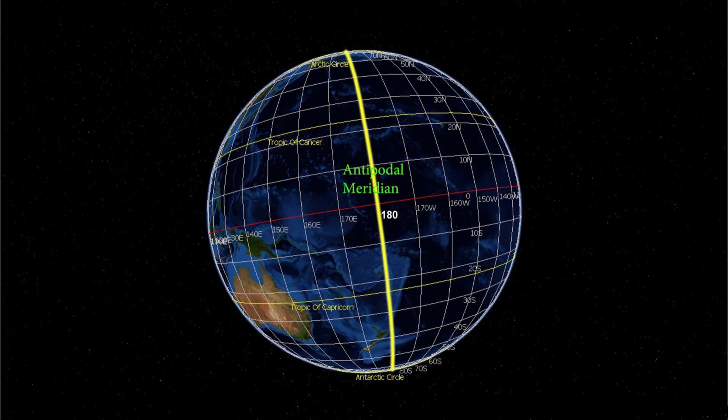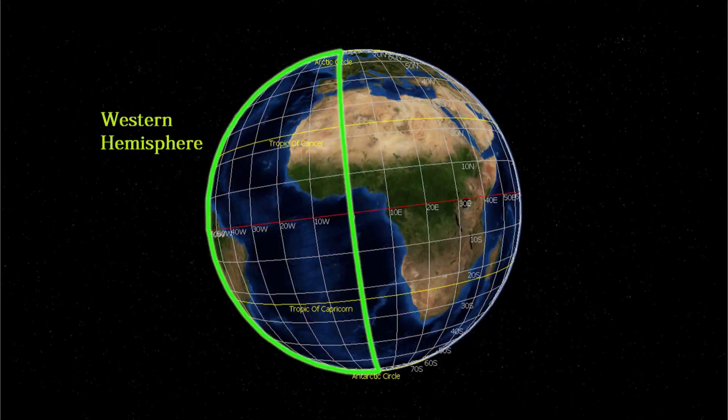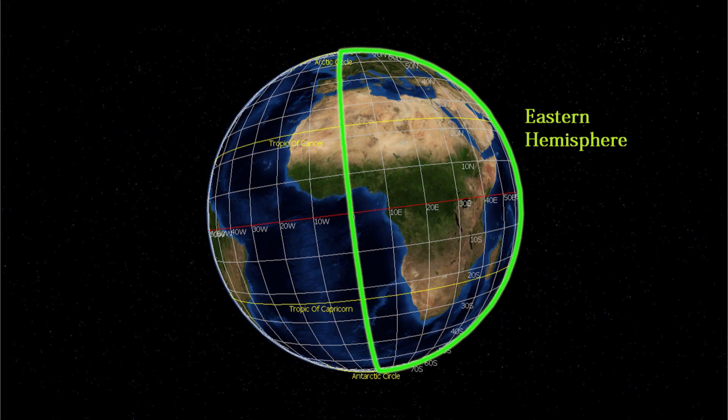The antipodal meridian of Greenwich is both 180 degrees west and 180 degrees east. West of the prime meridian is the western hemisphere, and east of the prime meridian is the eastern hemisphere.